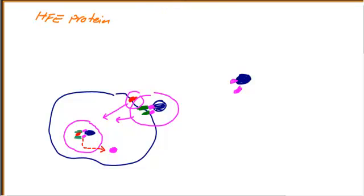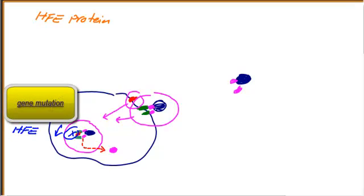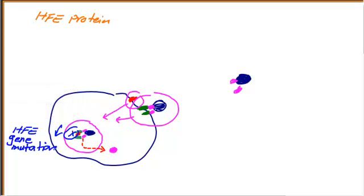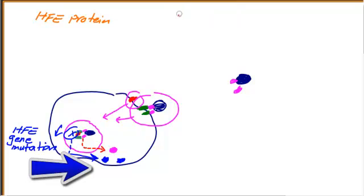That is basically the function of HFE protein. Now if you have a problem with HFE — an HFE gene mutation — you will not have functional HFE protein. As a result, there will be a lot of iron released to the cytoplasm and a lot of iron released into the circulation. We call this hereditary hemochromatosis.